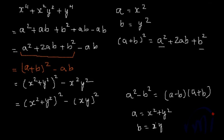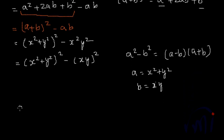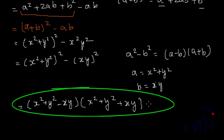So here we will have, this will be equal to a minus b, that is x square plus y square minus xy, and next term will be a plus b, which will be x square plus y square plus xy. So these will be two factors of x to the power 4 plus x square y square plus y to the power 4.